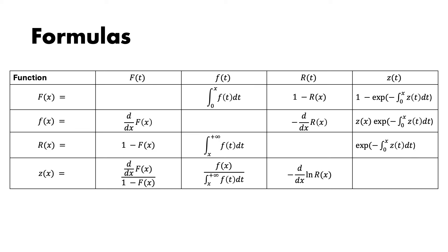This table shows that it is possible to go from one function to another in reliability theory. For example, if you have the probability density function, you can integrate from 0 to x to get the failure function F(x). Conversely, if you have the failure function, you can take the derivative to get the probability density function. All these correspondences are important.